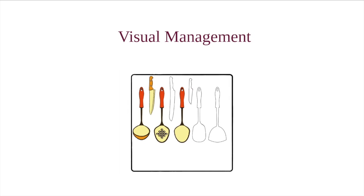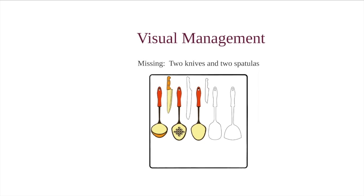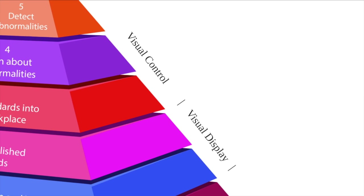Simple visual signals let us know something needs attention and ensures problems are not hidden or left unattended. When you can quickly see what is going on during the process, you don't waste time and energy. The visual signals used to identify potential problems or prevent errors are called visual displays and visual controls.